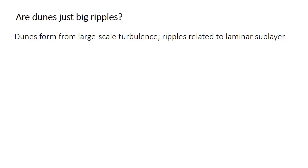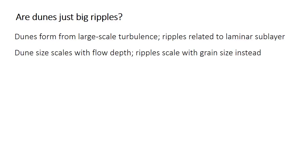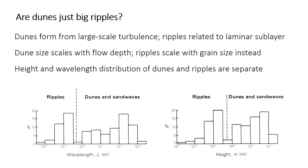Are dunes just ripples that get really big? Despite their similarities, dunes and ripples form in fundamentally different ways. Dunes form from large-scale turbulence in the turbulent sublayer of the boundary layer, but ripples are related to variations within the laminar sublayer. The two bedforms also scale differently — the size and spacing of dunes is related to the flow depth, so they both increase as the flow gets deeper. But ripple size is independent of flow depth; instead, ripples get bigger when the grain size gets bigger. There also appear to be two distinct peaks in the distribution of height or spacing: one at smaller sizes for ripples, then a gap, and then a broader peak for dunes at larger sizes.